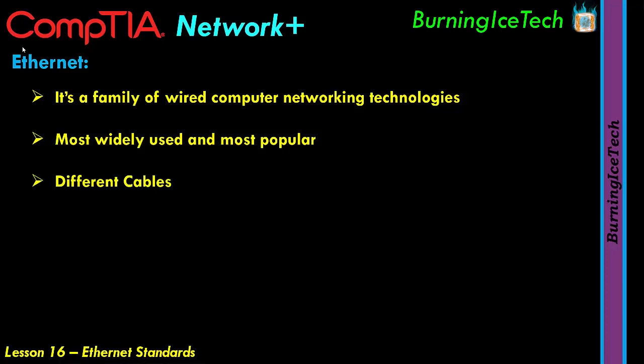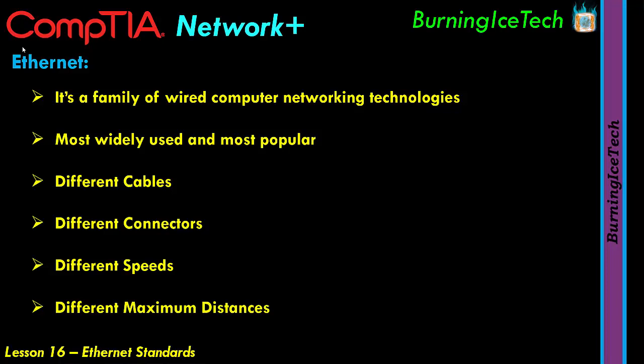Ethernet consists of different cables, and since it consists of different cables, we can also safely say these cables come with different connectors — not just the common RJ45. Each cable type also comes with its own benefits and drawbacks, and each has a maximum distance before the signal needs a boost, before it needs to be repeated — by a switch, a repeater, or a router.